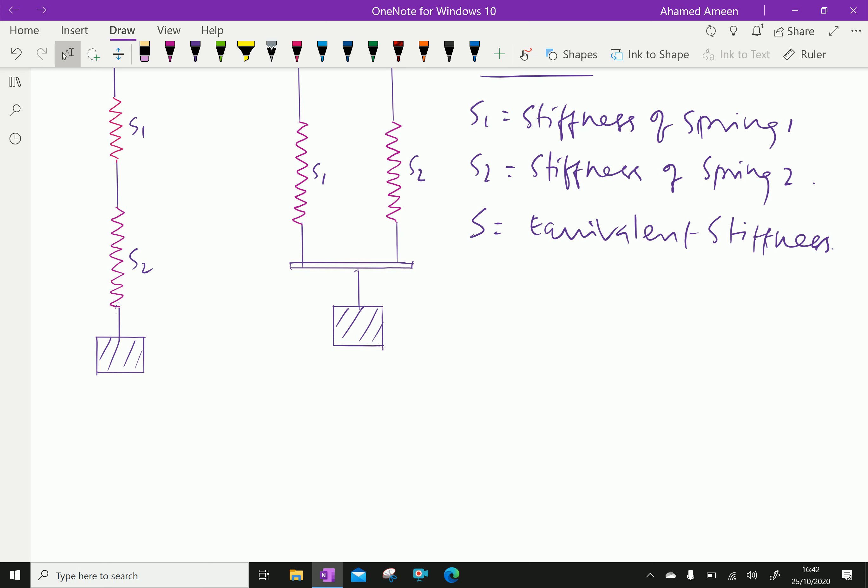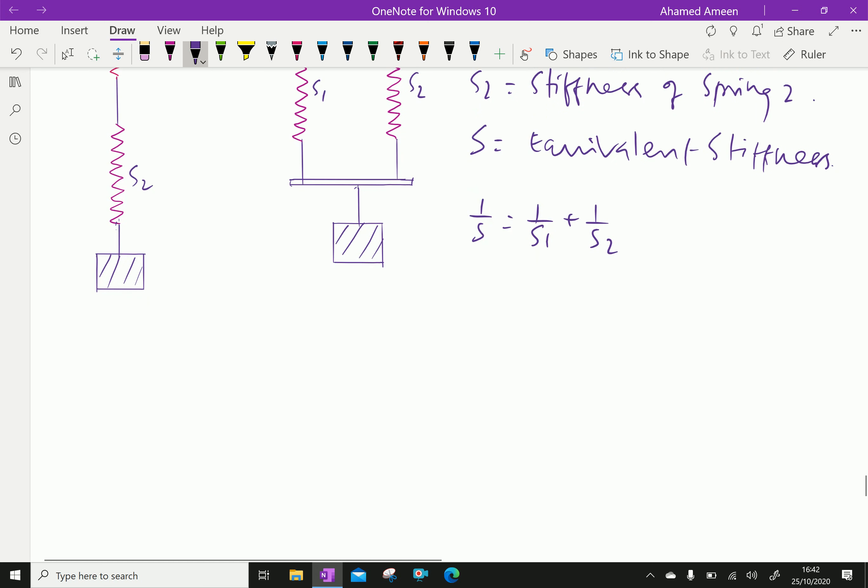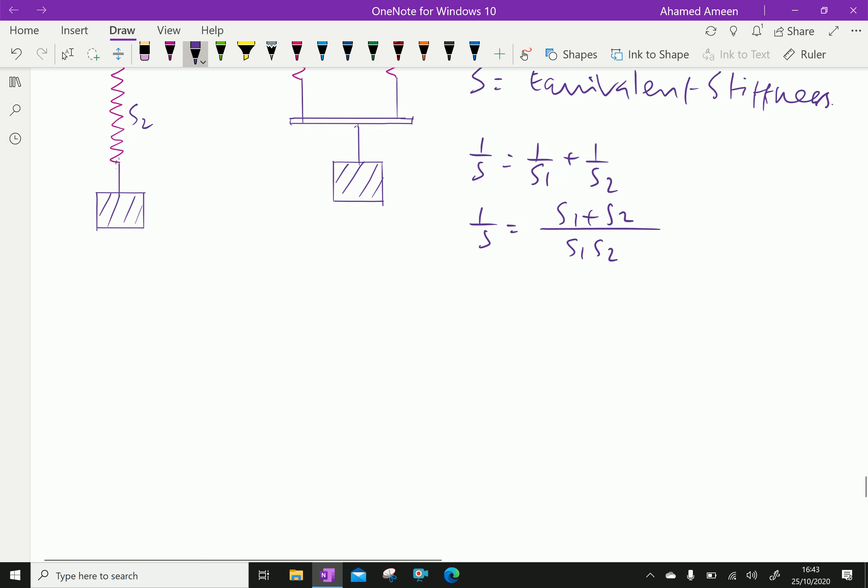First in series, the equivalent stiffness we can express like 1 over S equal 1 over S1 plus 1 over S2. That is, 1 over S equal S1 plus S2 over S1 S2. Therefore, S equal S1 into S2 over S1 plus S2.